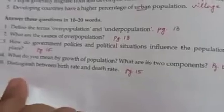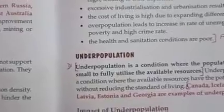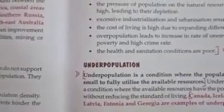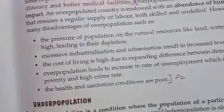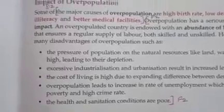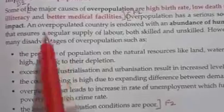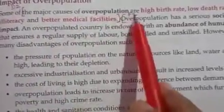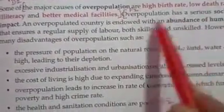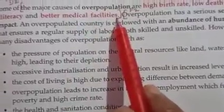The next question is: what are the causes of overpopulation? Its answer is on the same page, page number 13, under the heading 'Impact of Overpopulation.' The major causes of overpopulation are listed up to the point on medical facilities.